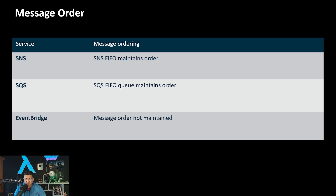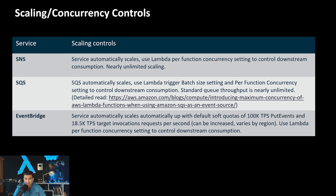Message order: SNS FIFO maintains order - this was not possible before. SQS FIFO queue maintains order. EventBridge message order is not maintained.